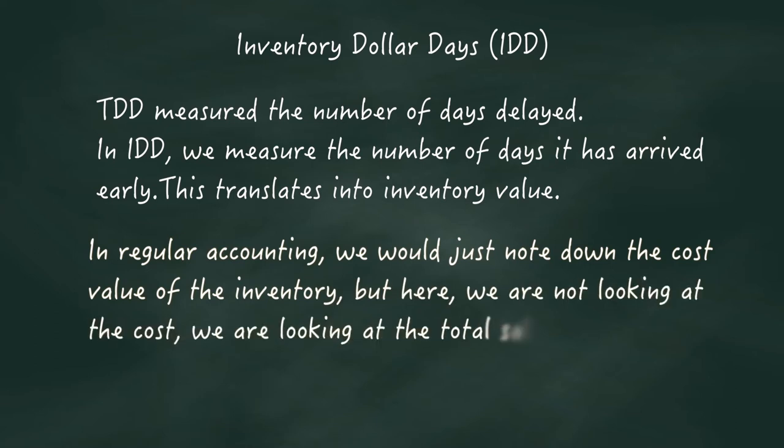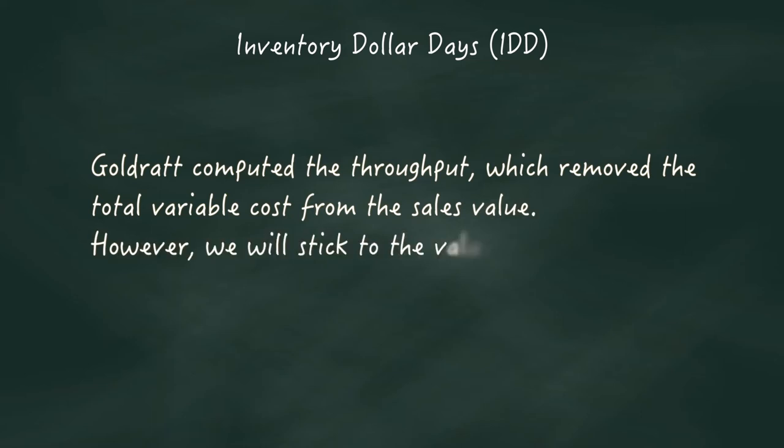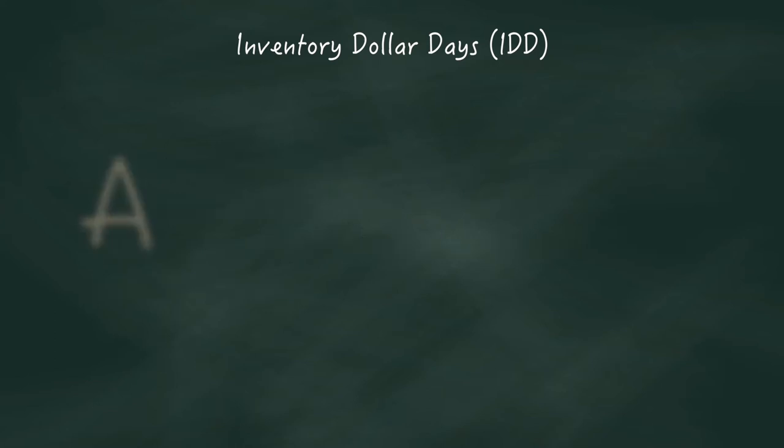In regular accounting, we would just note down the cost value of the inventory. But here, we are not looking at the cost. We are looking at the total sales value, not at the cost. Goldratt computed the throughput which removed the total variable cost from the sales value. However, we will stick to the value because it conveys a similar message. Have a look at our example. This is similar.